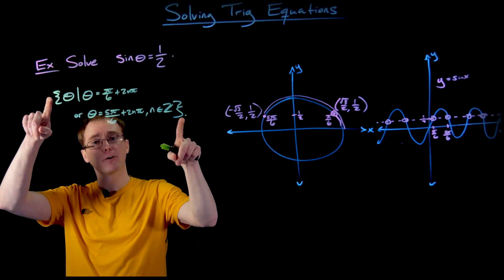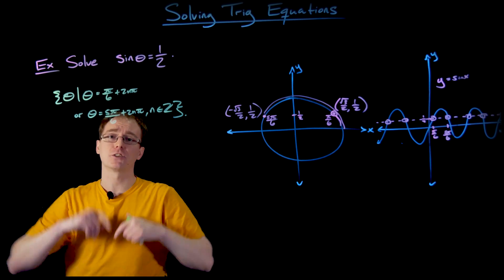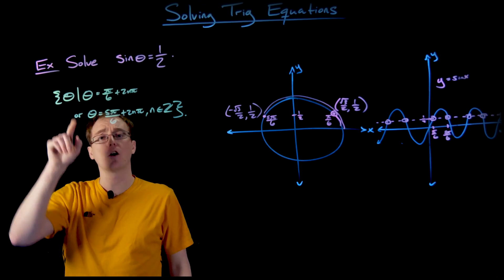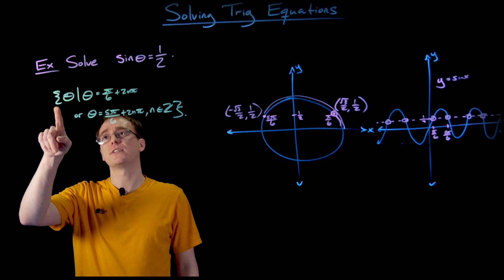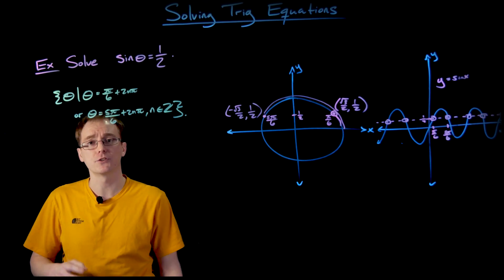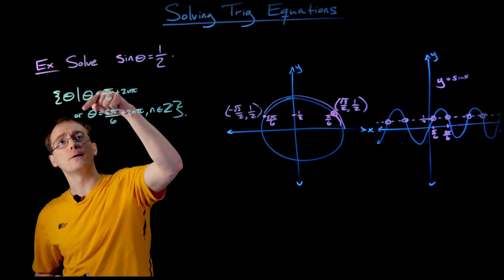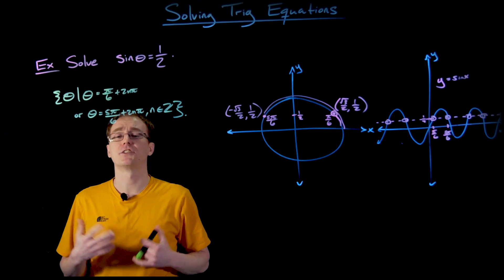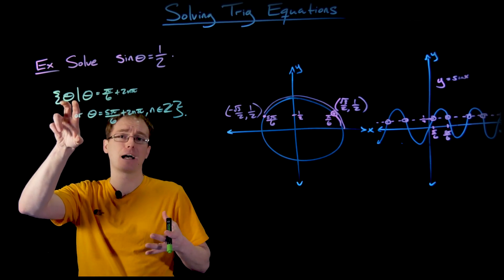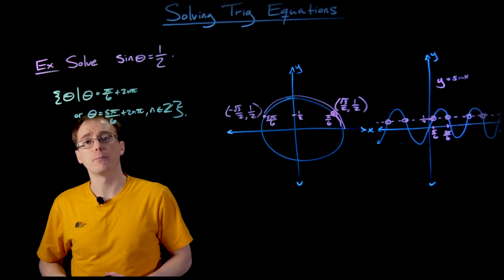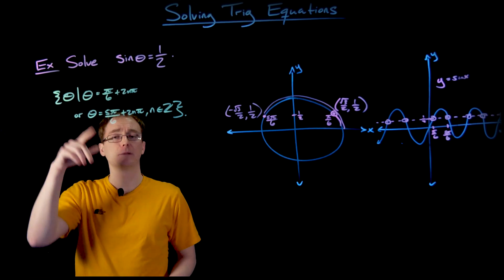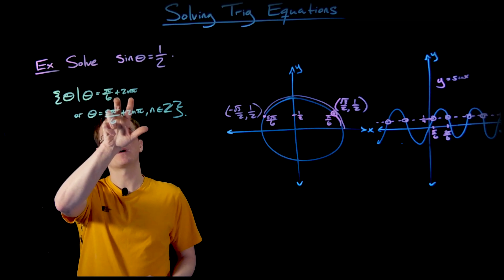The curly brackets at the beginning and end indicate the start and end of our set. What follows in the set builder notation describes what the members or elements of the set are going to look like — so this is the set of theta values, angles or arc lengths. The vertical bar is always read as 'such that.' What's on the left of the vertical bar describes what elements look like, and what's on the right are the conditions these things have to meet to be in our set. So theta is going to be some number such that theta is described by these equations.